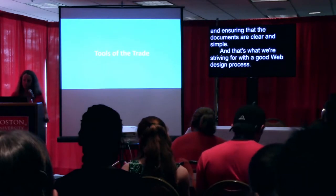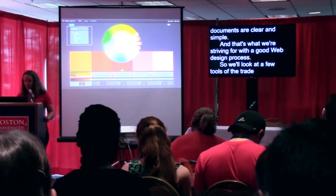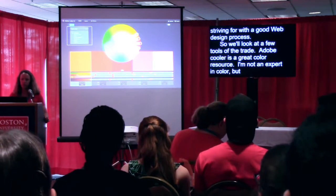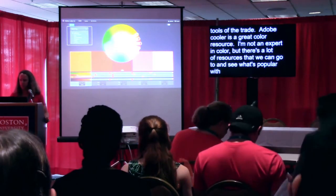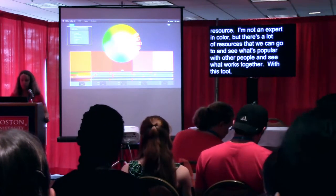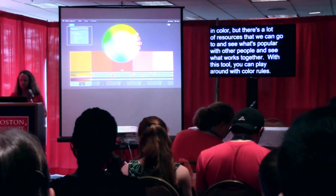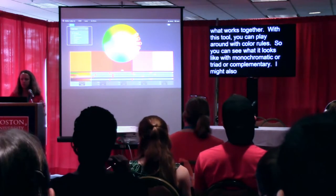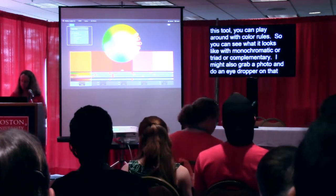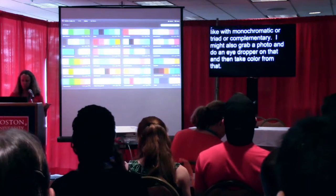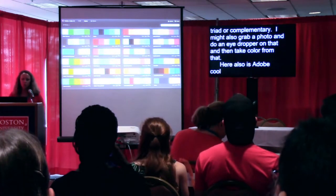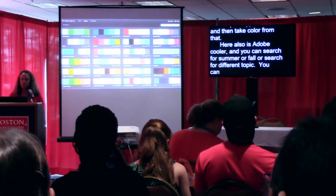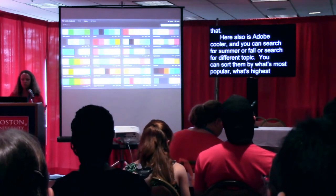Let's look at a few tools of the trade. Adobe Color is a great color resource. You can play around with color rules — analogous, monochromatic, triad, or complementary. You might also grab a photo and use the eyedropper to pull color from it. You can search for themes like summer or fall, sort by most popular or highest rated, and download the colors or use them as a sample.